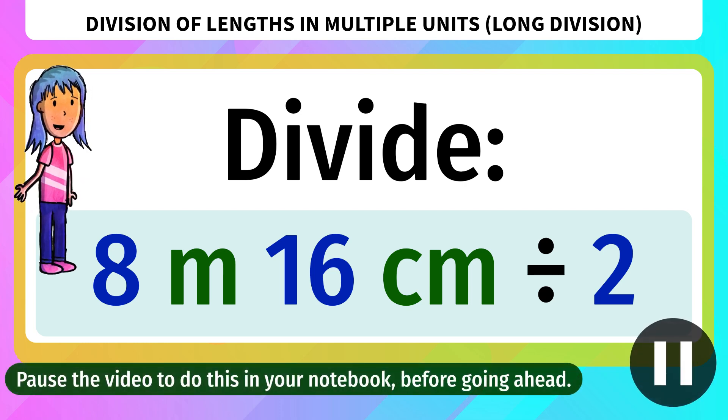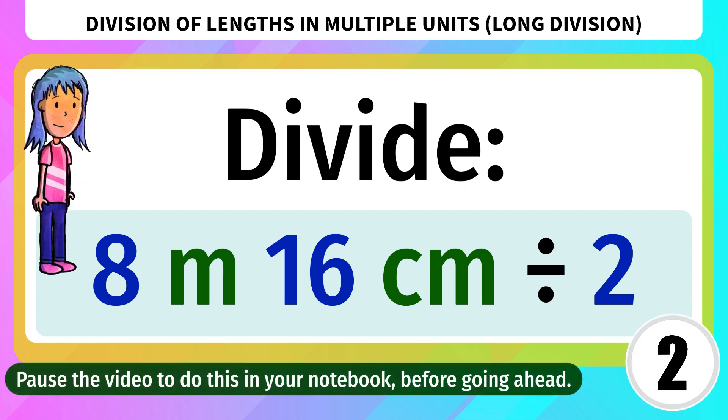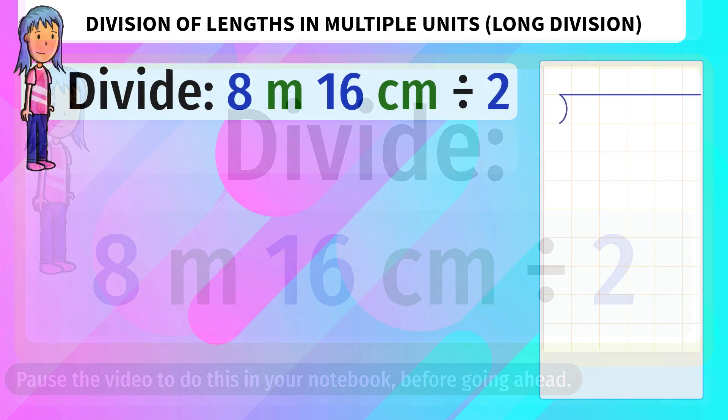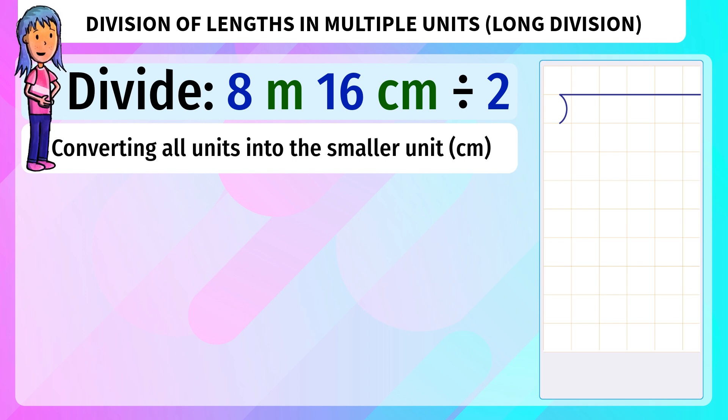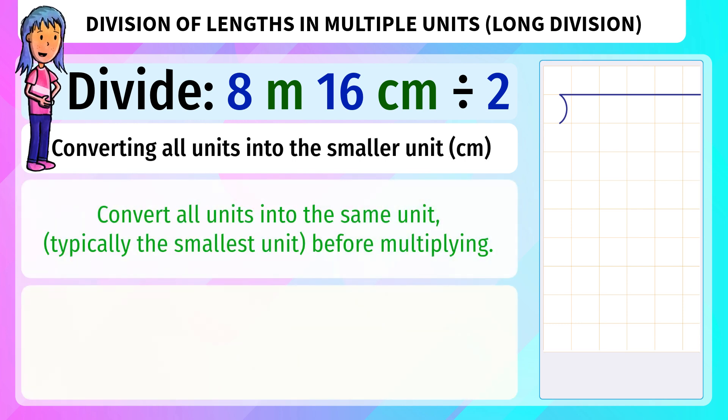Divide 8 meters 16 centimeters by 2. In divisions, when multiple units are involved, we convert all units into the smaller unit.